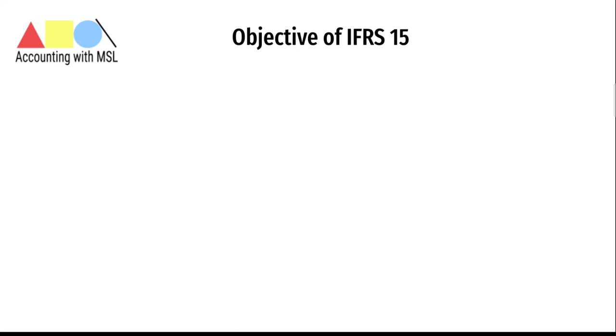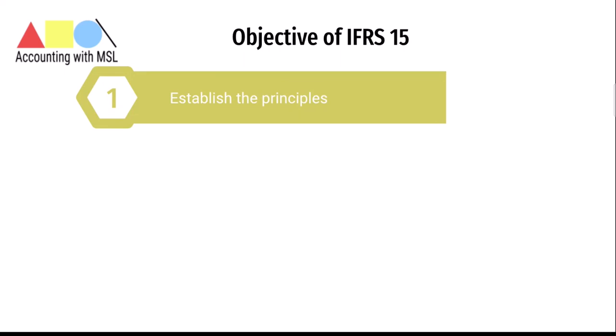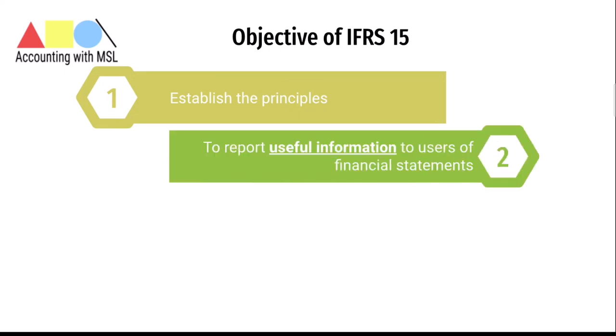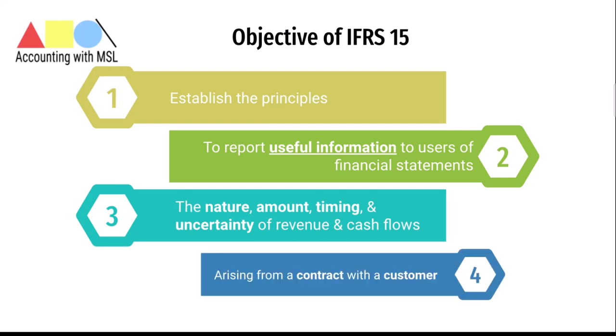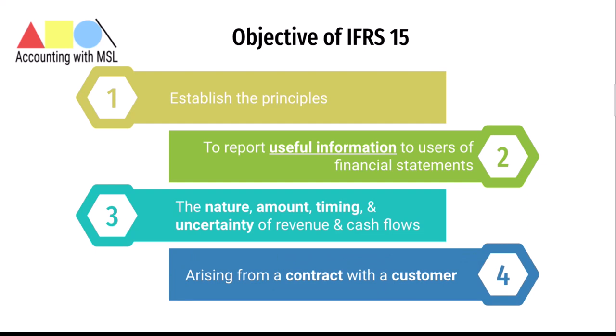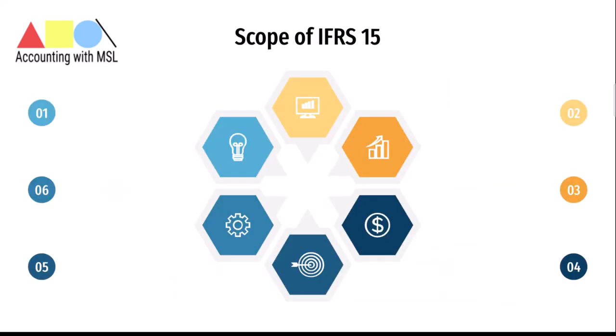What is the objective of IFRS 15? Why was this standard issued? The objective of IFRS 15 is to establish the principles that an entity shall apply to report useful information to users of financial statements about the nature, the amount, the timing and the uncertainty of revenues and cash flows arising from a contract with the customer. Remember, this is very important.